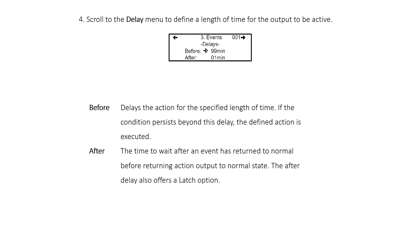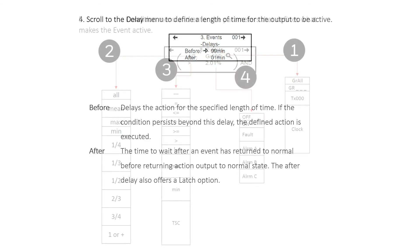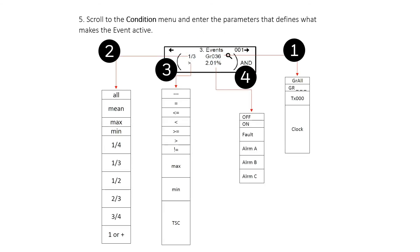The After Delay also offers a latch option. Scroll to the Condition menu and enter the parameters that define what makes the event active. Define the transmitter or group of transmitters included on this condition, how many of these transmitters should meet the condition to trigger the event, when the set points will meet the condition, and the set point to meet the condition on number 3.